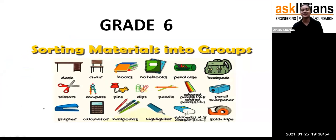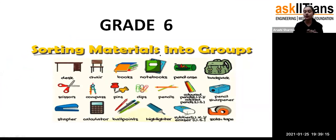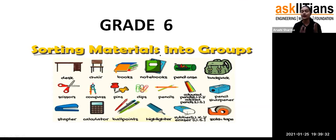Hello everyone, welcome to the class. So my dear students, what we are going to do today is start a new chapter. The chapter name is 'Sorting Materials into Groups' — how we can sort materials present in our surroundings with the help of some properties. We have already completed our first chapter, 'Fiber to Fabric.' My name is Arushi Sharma and I'll be your chemistry teacher, and we are going to start this chapter now.